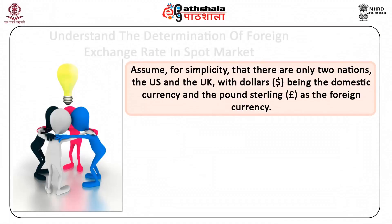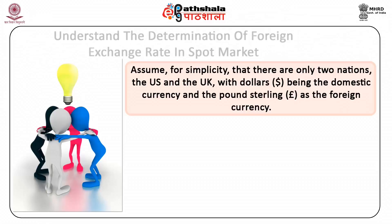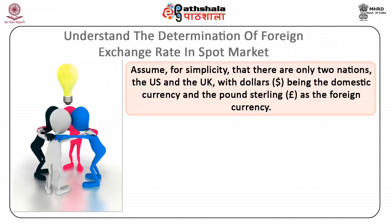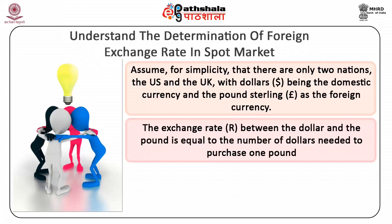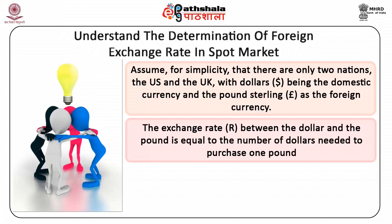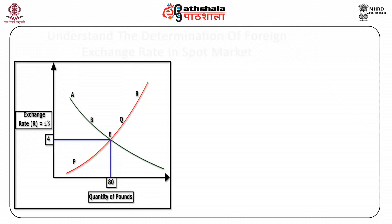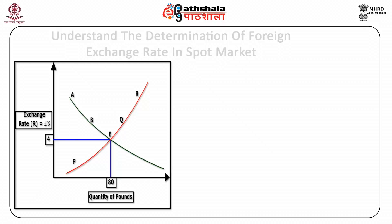Assume for simplicity that there are only two nations, the US and the UK, with dollars being the domestic currency and the pound sterling as the foreign currency. The exchange rate R between the dollar and the pound is equal to the number of dollars needed to purchase one pound. That is, R equals dollar divided by pound sterling. For example, if R equals four, this means that four dollars are required to purchase one pound. This figure shows the determination of the equilibrium exchange rate between US and UK under a framework of flexible exchange rate system.